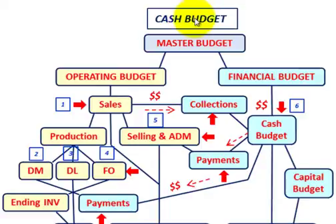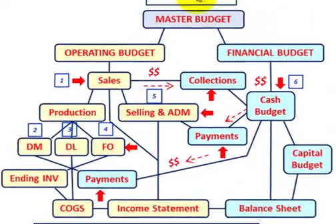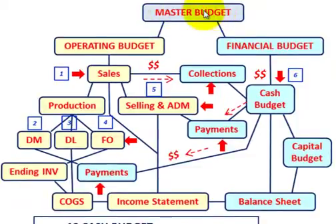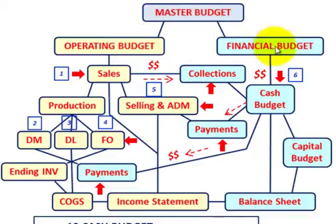What we're going to be going over here is the cash budget and how we calculate it. Starting with our budgets, we start with our master budget, and then under our master budget we're going to have our operating budget and our financial budget. Under our financial budget, this is where we're going to have our cash budget.